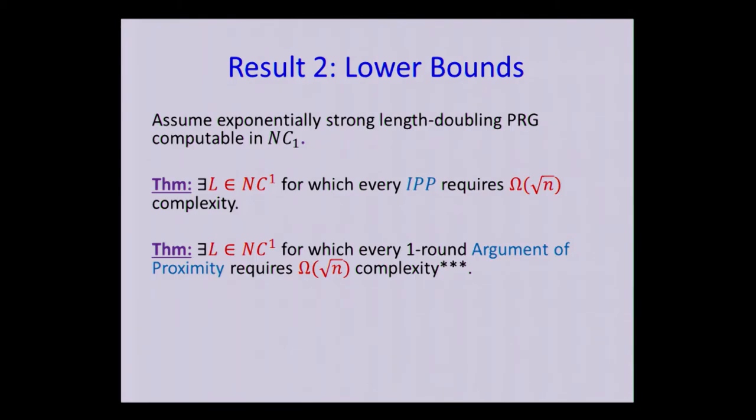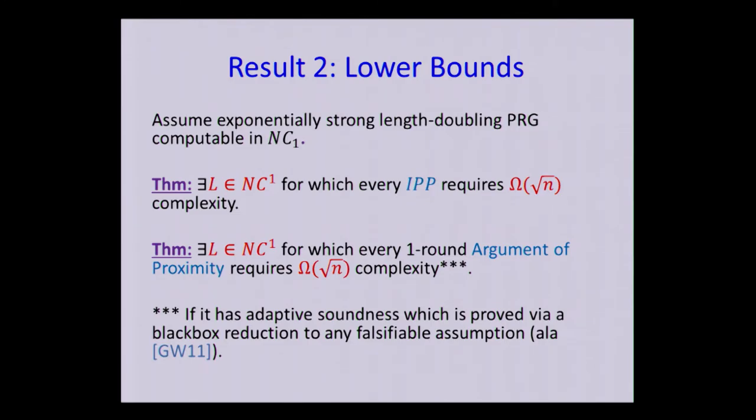The second result is an extension to this notion of a one-round argument of proximity. It says, again, that there's a language for which every one-round argument of proximity requires square root of n complexity. If we allow two rounds, we have this result, we have the result using PCPs of proximity, which overcomes the square root of n barrier. But there are a lot of stars there. So the stars basically say that this only rules out constructions that are based on standard assumptions and use standard proof techniques. And I won't get into exactly what's written over there, but this is both based and similar to a result by Gentry and Wichs from a few years ago.